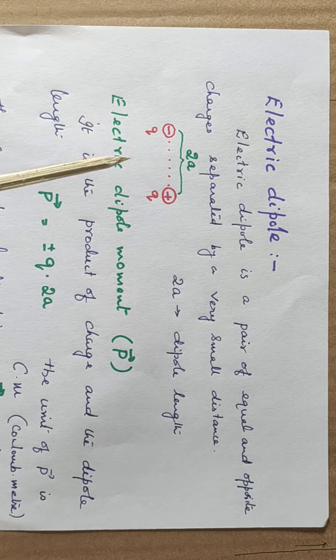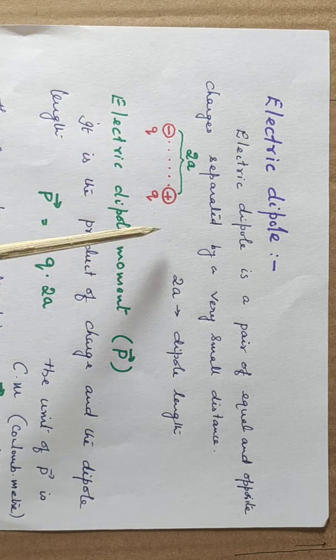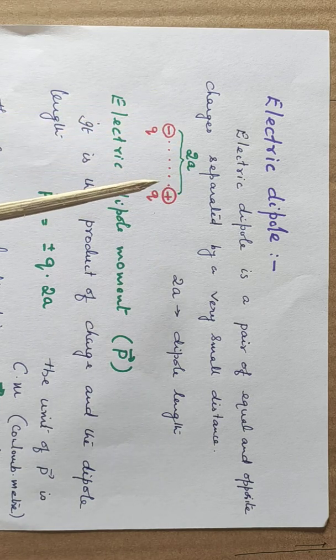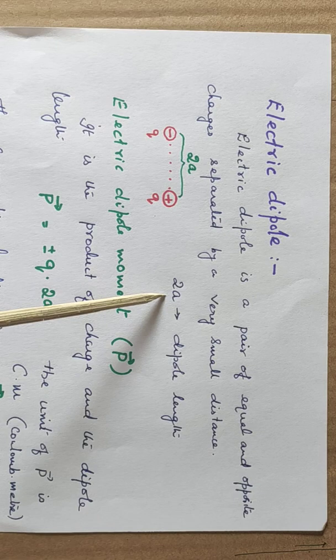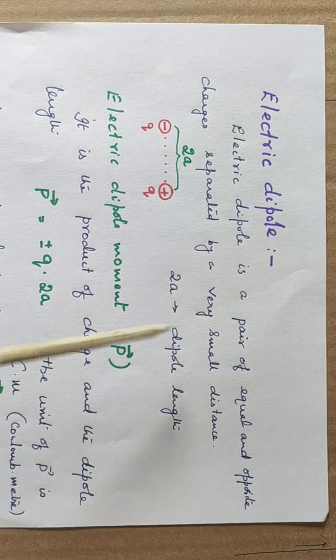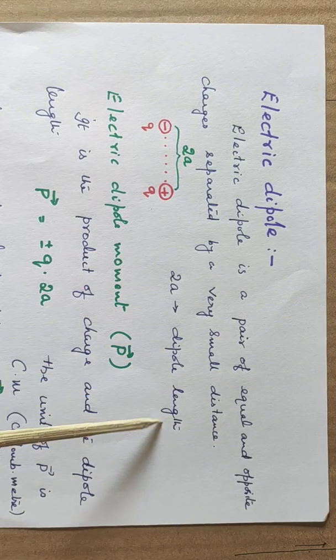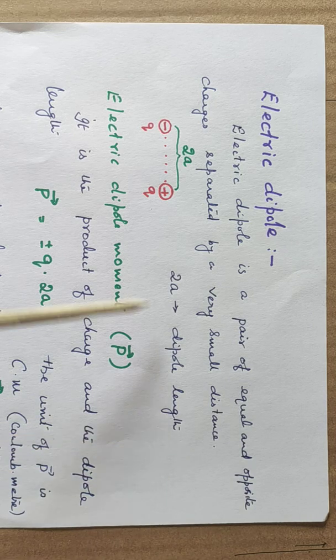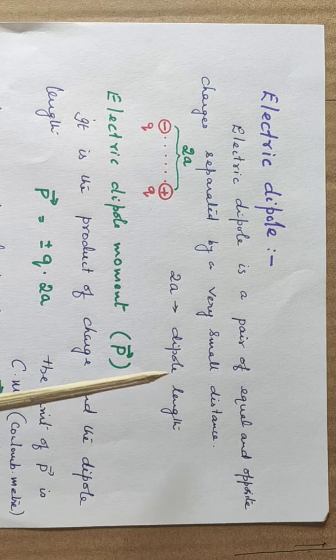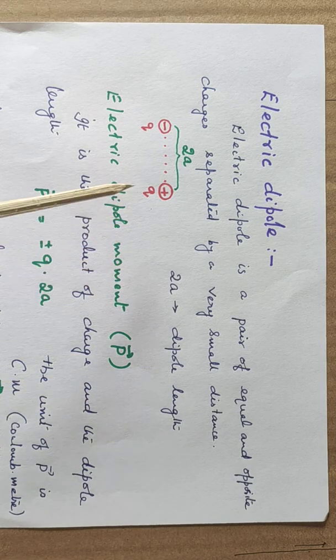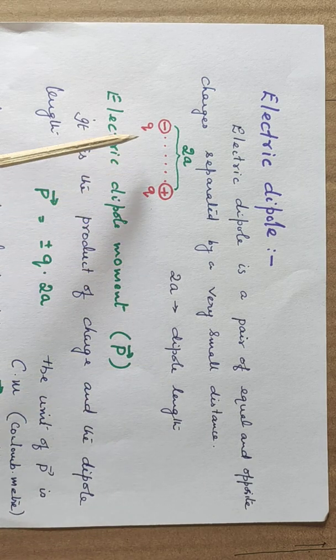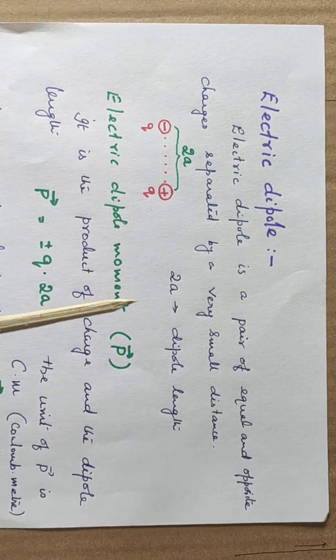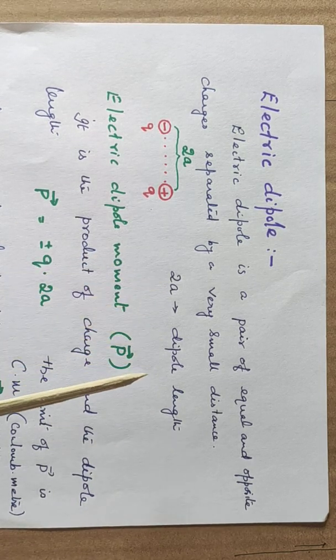And here the figure shows a negative charge Q and a positive charge Q separated by a small distance 2a. So this small distance 2a is the dipole length and that is of the order of angstrom. It is such a small value. Now, these two charges will be very close to each other that the dipole length is very very short.